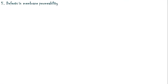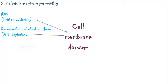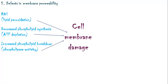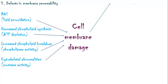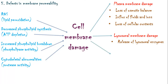The next mechanism is defects in membrane permeability, affecting all types of membranes including plasma membrane, lysosomal membrane, and mitochondrial membrane. Membranes can be damaged by reactive oxygen species causing lipid peroxidation, decreased phospholipid synthesis due to ATP depletion, increased phospholipid breakdown due to phospholipase activation, and cytoskeletal abnormalities due to increased protease activity. Plasma membrane damage results in loss of osmotic balance, influx of fluid and ions, and leakage of cellular contents. Lysosomal membrane damage causes release of digestive enzymes, and mitochondrial damage results in formation of permeability transition pores.